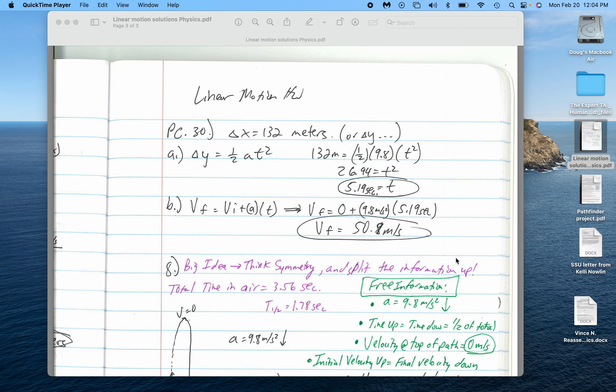Free fall means the only force acting on something is gravity, and you could ignore all air resistance. The distance that things fall in the NASA Glenn facility is 132 meters. You can use this formula to figure out the time it would take to fall. That's around 5.19 seconds.